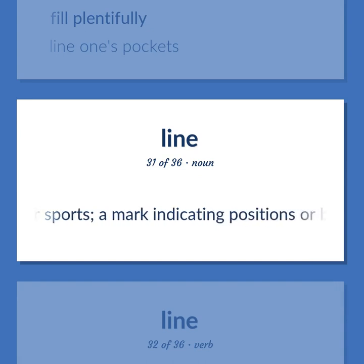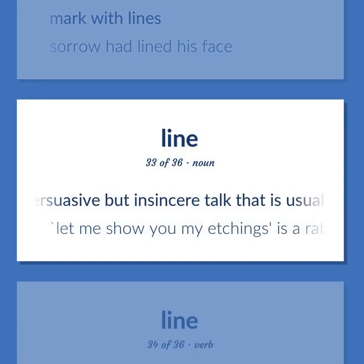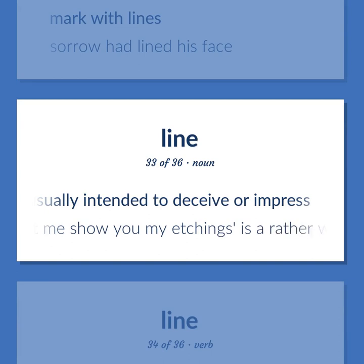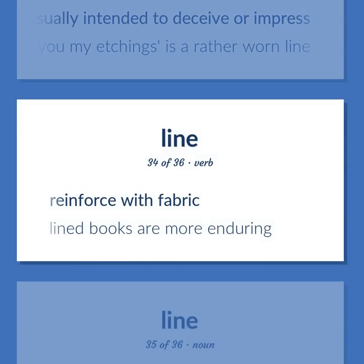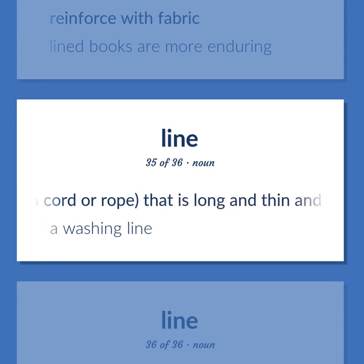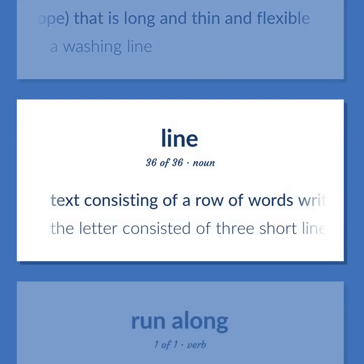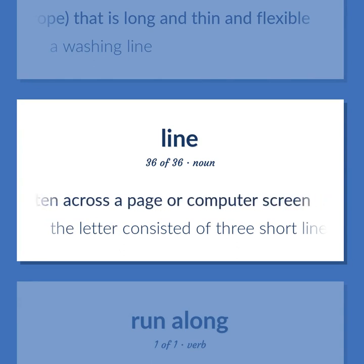LINE (continued): In games or sports, a mark indicating positions or bounds of the playing area. Mark with lines — 'sorrow had lined his face.' Persuasive but insincere talk that is usually intended to deceive or impress — 'let me show you my etchings as a rather worn line.' Reinforce with fabric — 'lined books are more enduring.' Something, as a cord or rope, that is long and thin and flexible — 'a washing line.' Text consisting of a row of words written across a page or computer screen — 'the letter consisted of three short lines.'